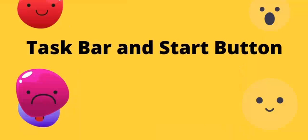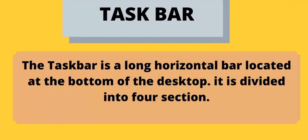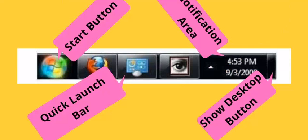Taskbar and Start Button. The taskbar is a long horizontal bar located at the bottom of the desktop. It is divided into four sections: Start Button, Quick Launch Bar, Notification Area, and Show Desktop Button.